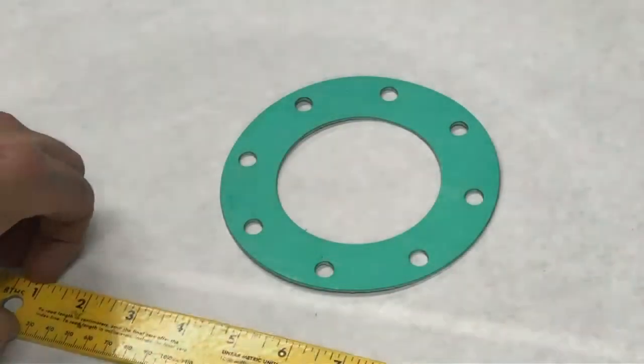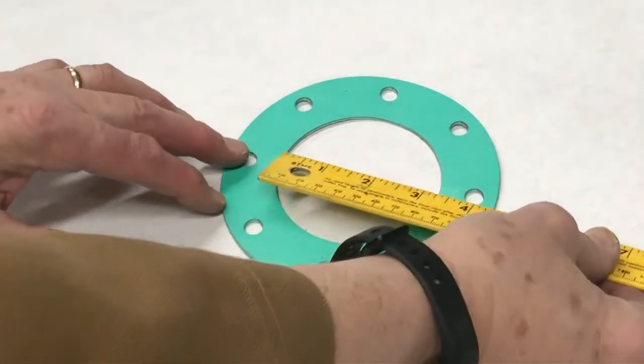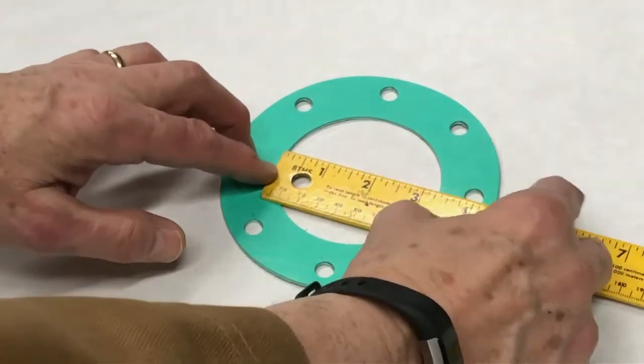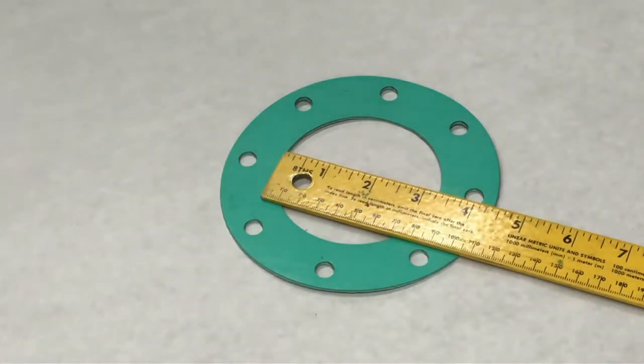So if we measure this and take a ruler, first thing is the ID. Cross the diameter, and this is three and a quarter inches ID.